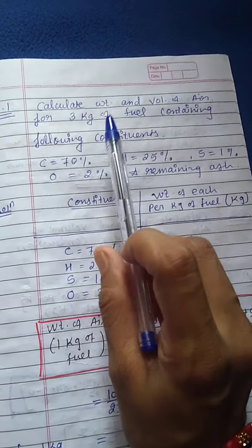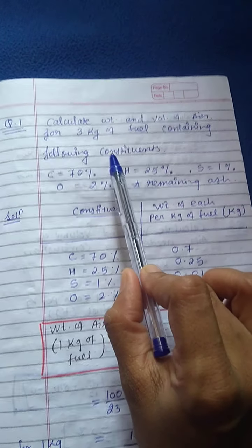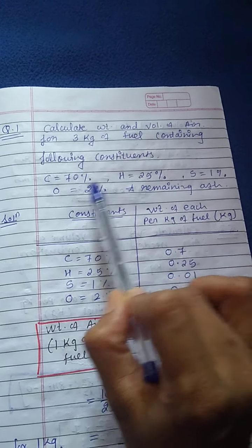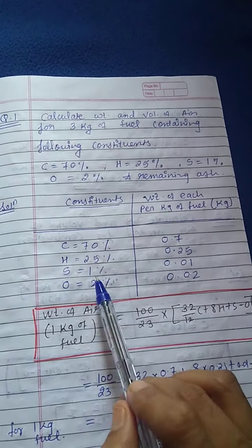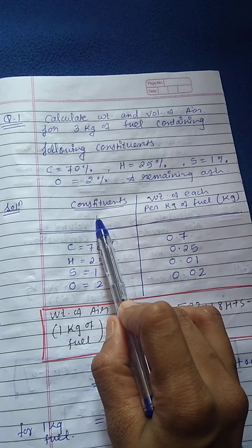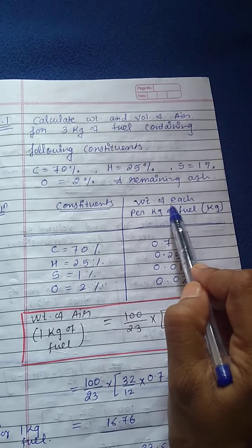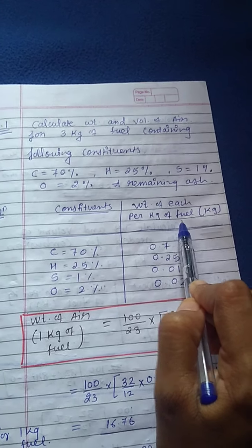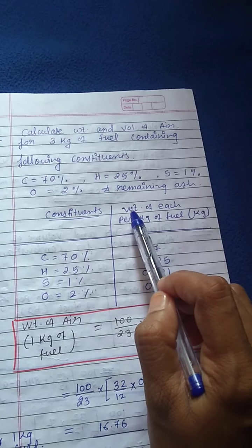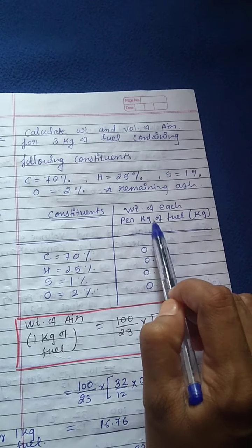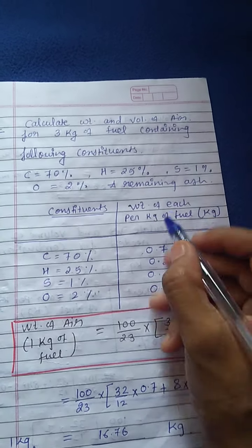Now I'll explain numerical one. We have to calculate weight and volume of air for combustion of 3 kg of solid fuel. The elemental composition is given in percentage: carbon, hydrogen, sulfur, and oxygen. While solving, we make two columns — first column for constituents, second column for weight of each constituent per kg of fuel. Carbon is 70%, so weight of carbon in 1 kg of fuel is 70/100 × 1 = 0.7 kg.